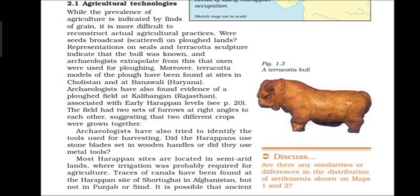A ploughed field was found at Kalibangan in Rajasthan, associated with early Harappan levels. The field had two sets of furrows at right angles to each other, suggesting two different crops were grown together. Archaeologists have also tried to identify the tools used for harvesting — whether Harappans used stone blades set in wooden handles or metal tools. It appears that both stone and metal blades were used.